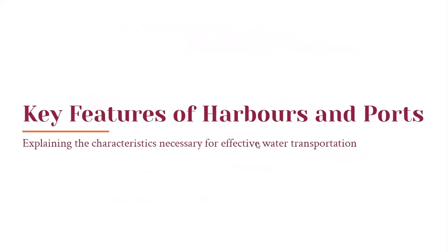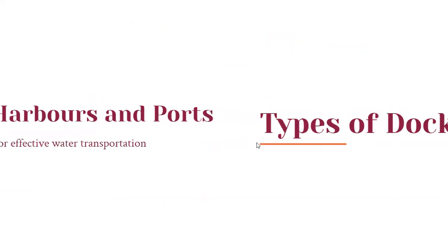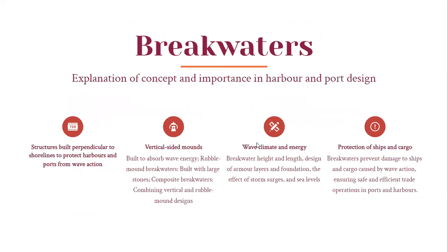Key features for harbors and ports: types of docks and jetties, breakwaters. Breakwaters are structures built perpendicular to the shoreline to protect harbors and ports from wave action. Types include vertical-sided mounts built to absorb wave energy, rubble mound breakwaters built with large stones, and composite breakwaters combining vertical and rubble mound designs. Design considerations include wave climate and energy, breakwater height and length, design of armor layers and foundation, and the effect of storm surges and sea levels.